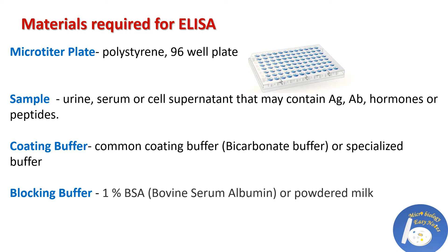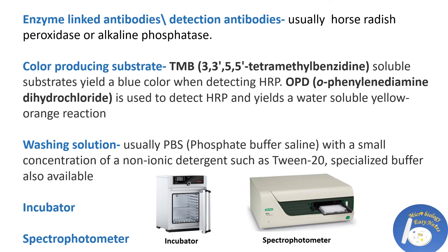A common coating buffer is bicarbonate buffer, though specialized buffers are also available. Next is blocking buffer. The most basic blocking buffer used in ELISA is 1% BSA, which is bovine serum albumin. Instead of BSA, we can also use dried powder milk.